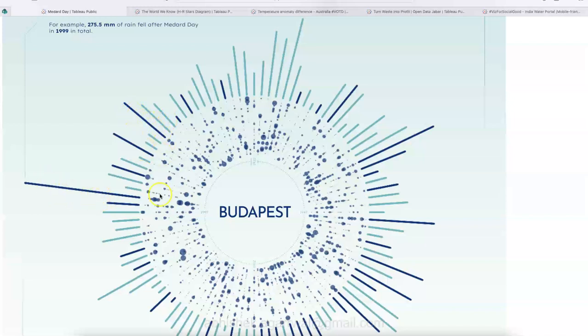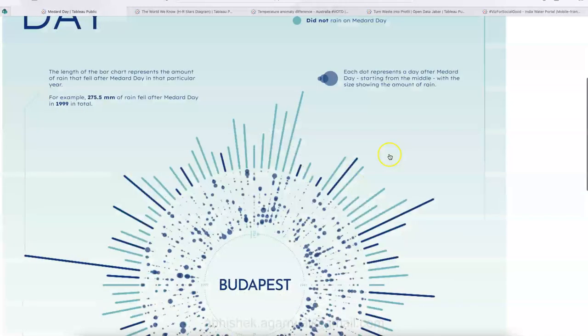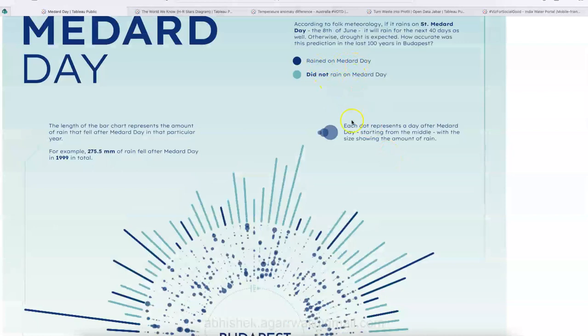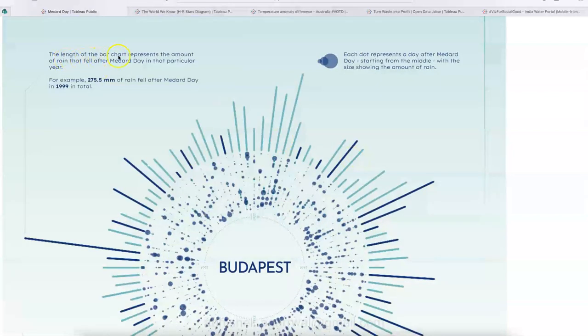So what does legend mean? Well, if you have this dark blue, then rained on Medard Day. And if it is a lighter one, then did not rain on Medard Day. So clearly, as you can see, this indicates that it did not rain on Medard Day. But over here, these big spikes basically indicating that rain on Medard Day.